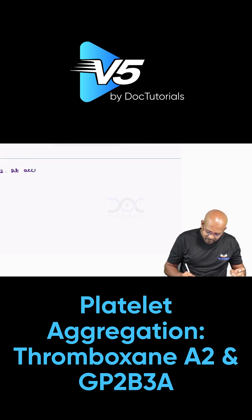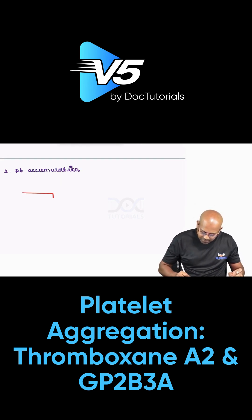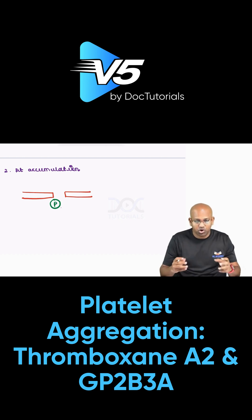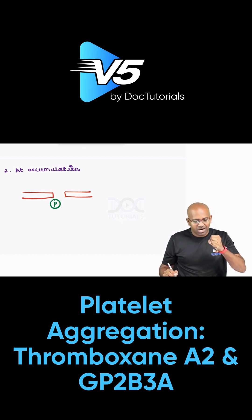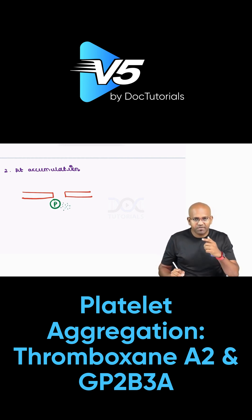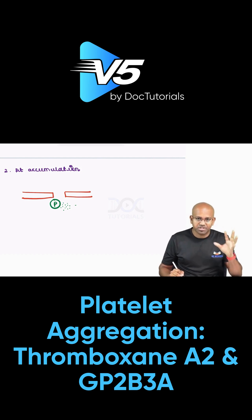The second step is called platelet accumulation. Here we have the blood vessels which are getting broken down, and we have the first platelet which is accumulating or moving towards that area. As I've told, platelets are getting activated and will start releasing out substances — one substance I mentioned previously is ADP, but not only ADP — multiple different substances will be released.